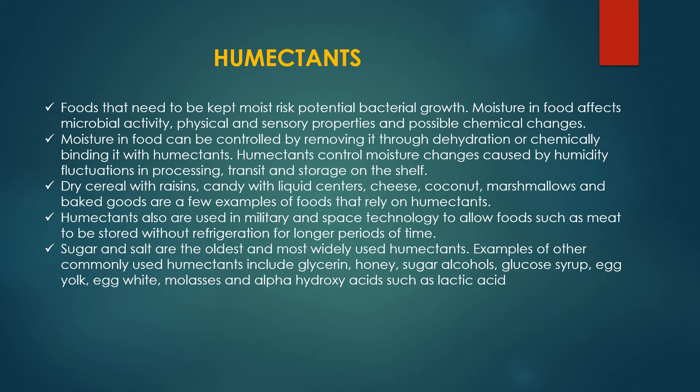Humectants can control moisture changes caused by humidity fluctuations in processing, transit, and storage on the shelf. Dry cereals with raisins, candies with liquid centers, cheese, coconuts, marshmallows, and baked goods are a few examples of foods that generally rely on humectants. Humectants are also used in military and space technology to allow foods such as meat to be stored without refrigeration for prolonged periods of time.